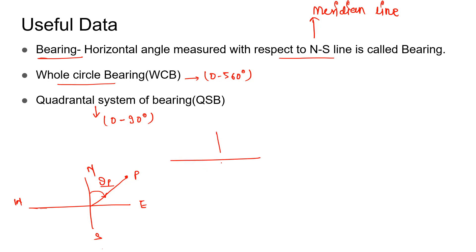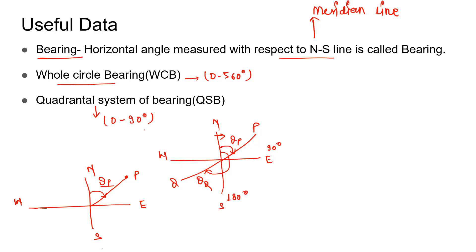Drawing a figure with east, west, north, and south directions. In whole circle bearing, all measurements are taken from the north direction. If we have a point P, its bearing with respect to north will be theta P, and all angles are measured in the clockwise direction only. For a point Q, its bearing with respect to north in whole circle bearing will be theta Q, somewhere between 180 to 270 degrees.